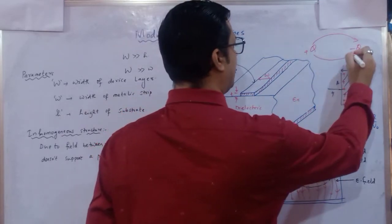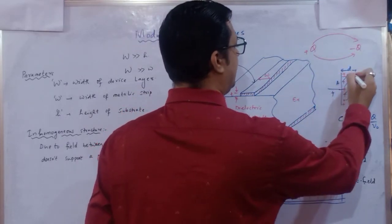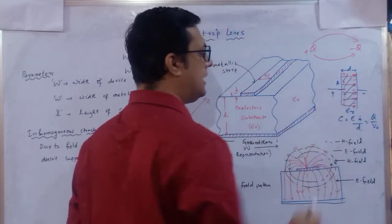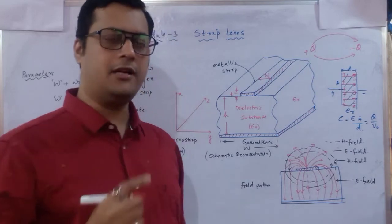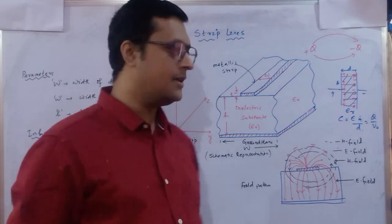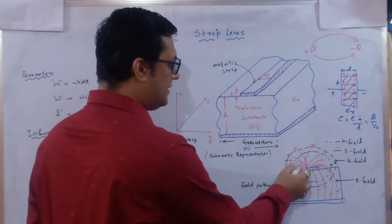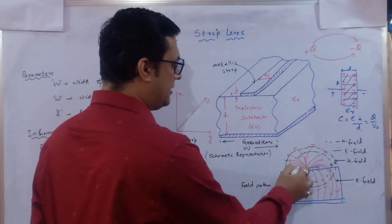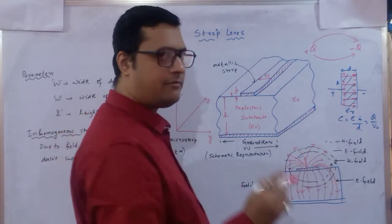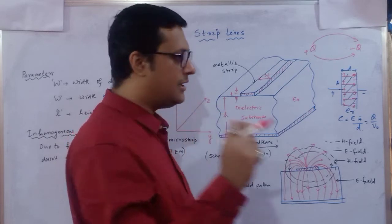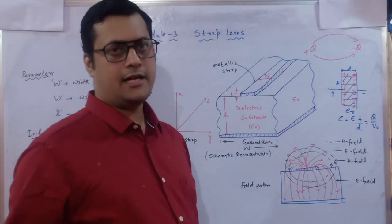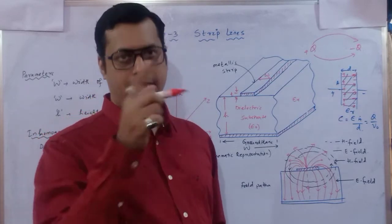The electric field generates from the positive charge plate and terminates at the negative charge plate, moving radially outward. These electric fields move from the thin metallic plate down to the ground plane, as shown by the red lines. Due to the flow of charge, current generates, and due to current, a magnetic field also generates.